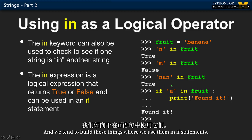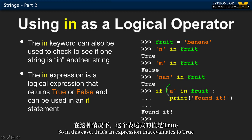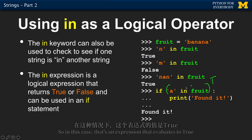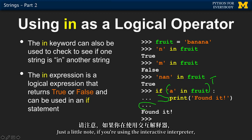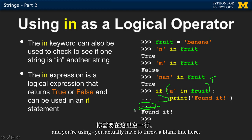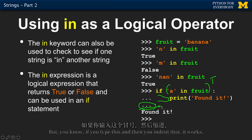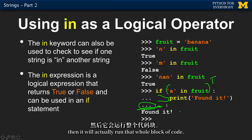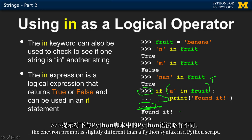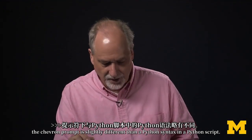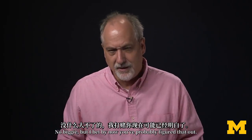We build these things where we use them in if statements. If 'a' is in fruit, then print 'found it'. That expression evaluates to true because 'a' is in fruit, so the code executes. A little note: if you're using the interactive interpreter, you have to throw a blank line after the if block. You don't need a blank line in real Python when writing in a file. You type the code, indent, then hit enter and it runs that whole block. The chevron prompt is slightly different than Python syntax in a script.